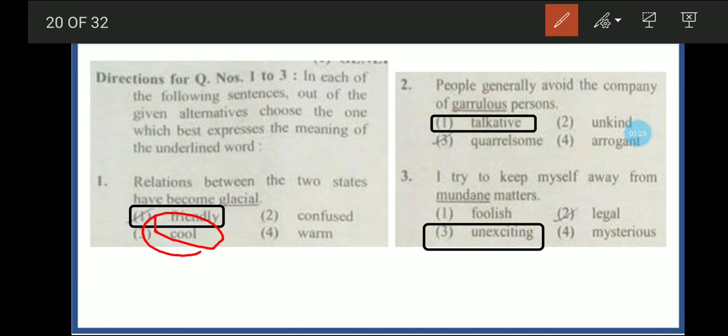Next question: People generally avoid the company of the garrulous person. Garrulous means talkative, someone who talks too much. People ignore such talkative people. The synonym that best expresses this is talkative. The other options are quarrelsome, unkind means cruel, and arrogant means proud.